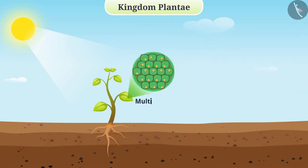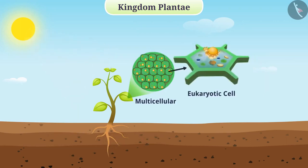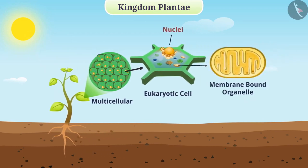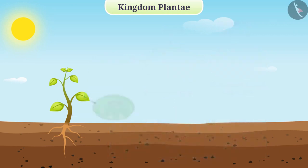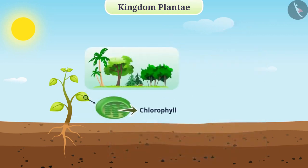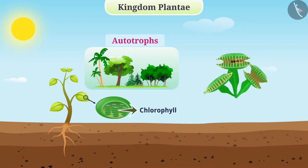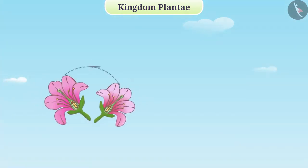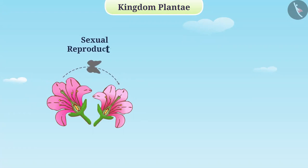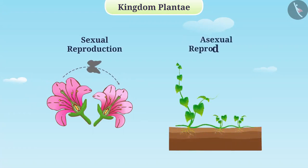They are all multicellular organisms which are formed from eukaryotic cells. That is, they have well-defined nuclei in cells and membrane-bound organelles. They contain cell walls which are mainly made up of cellulose. Different functions in their body are performed by tissues. Due to the presence of chlorophyll, most organisms in this class are autotrophic, but some are also heterotrophs. Some organisms produce offspring from sexual reproduction and some from asexual reproduction.